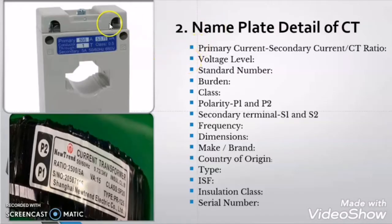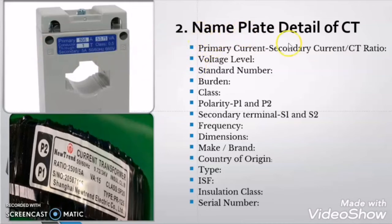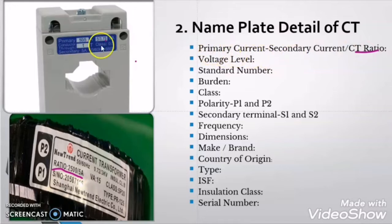So let's start this video. In the current transformer you will find many details available. We will discuss each of them deeply to better understand the full nameplate detail of current transformer. The first thing which you will find on the current transformer nameplate is the CT ratio, or primary current or secondary current. Let's try to understand deeply what is CT ratio, what is primary and secondary current detail given on the CT.